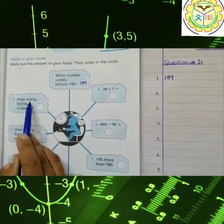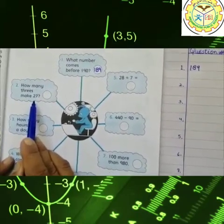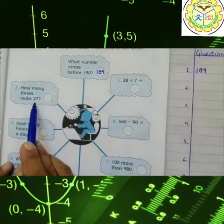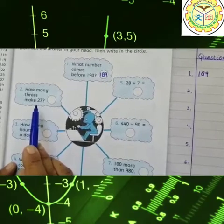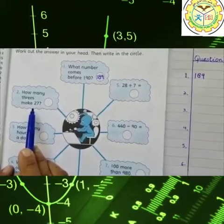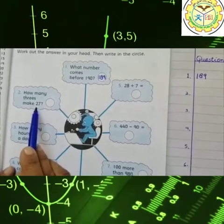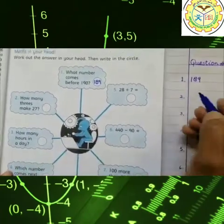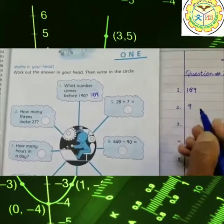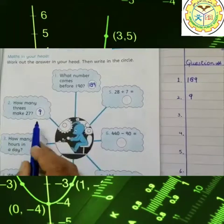This is our answer and I am also writing this answer in this circle: 189. Now our question number two is: how many threes make 27? It means in the table of three, where 27 stands when we read the table in your mind. Table 3, we know at the nine, nine place the number 27 place. It means three nines are 27.